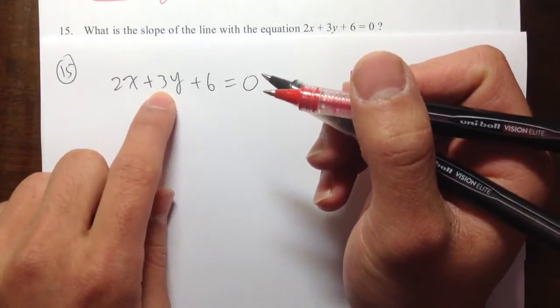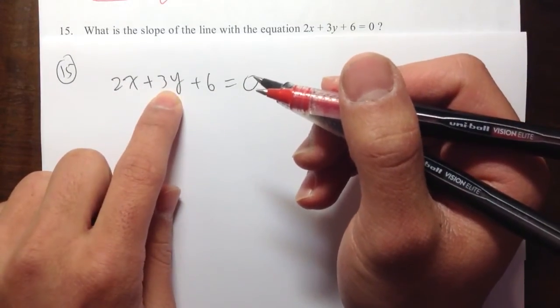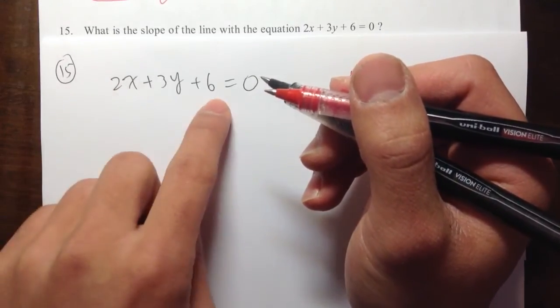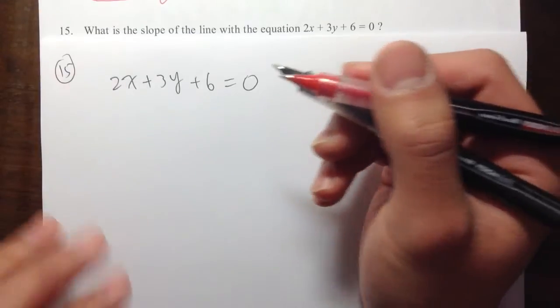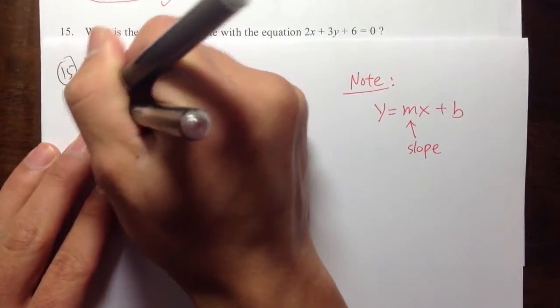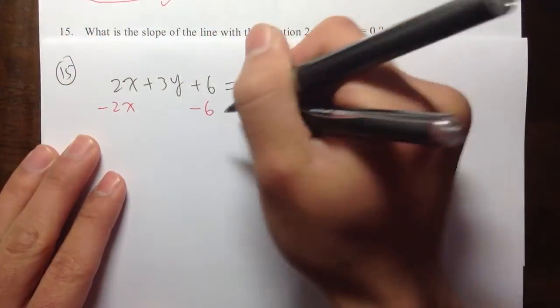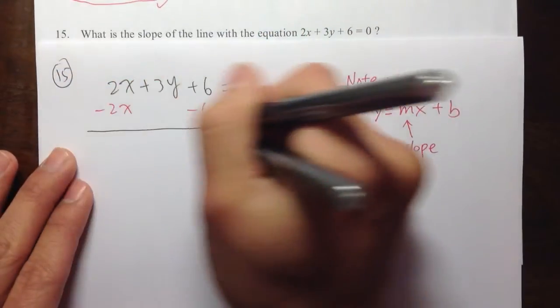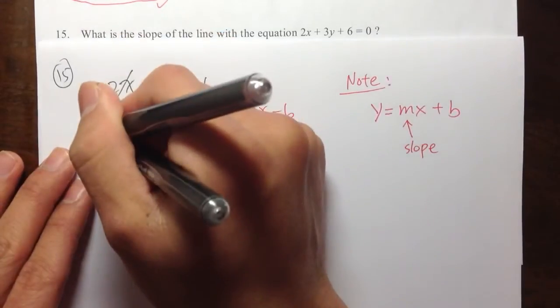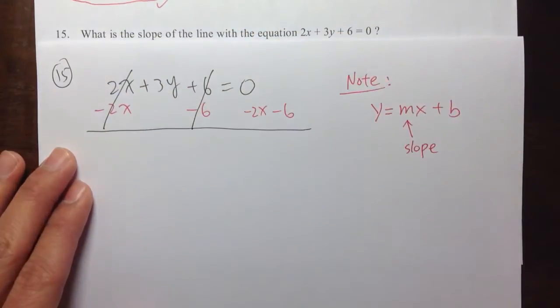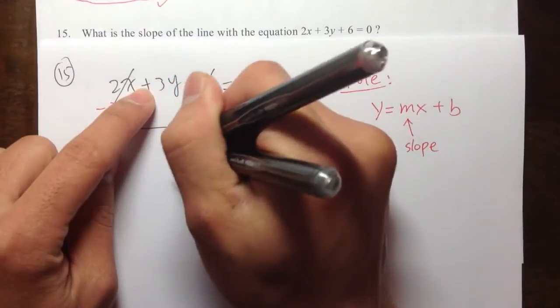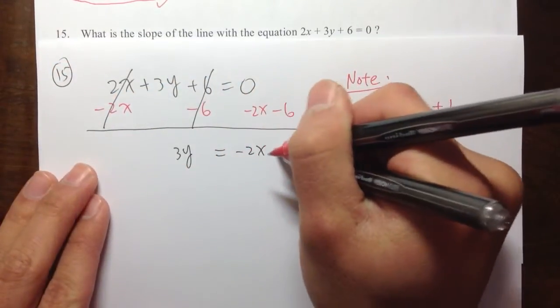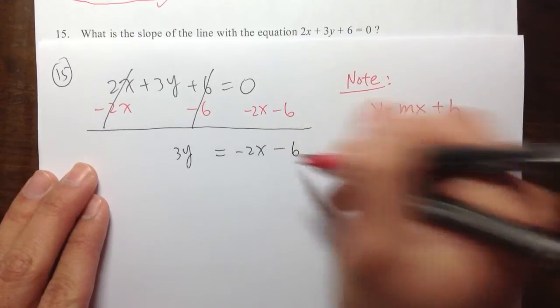I have 3y right here. I want to isolate the 3y at least. So I need to first minus the 2x and minus the 6 on both sides. So minus 2x, minus 6. So I'm going to put minus 2x, minus 6. And let me see what we get. These two cancel out. And then positive 6 and minus 6 cancel out. I have 3y equals to negative 2x, minus 6.